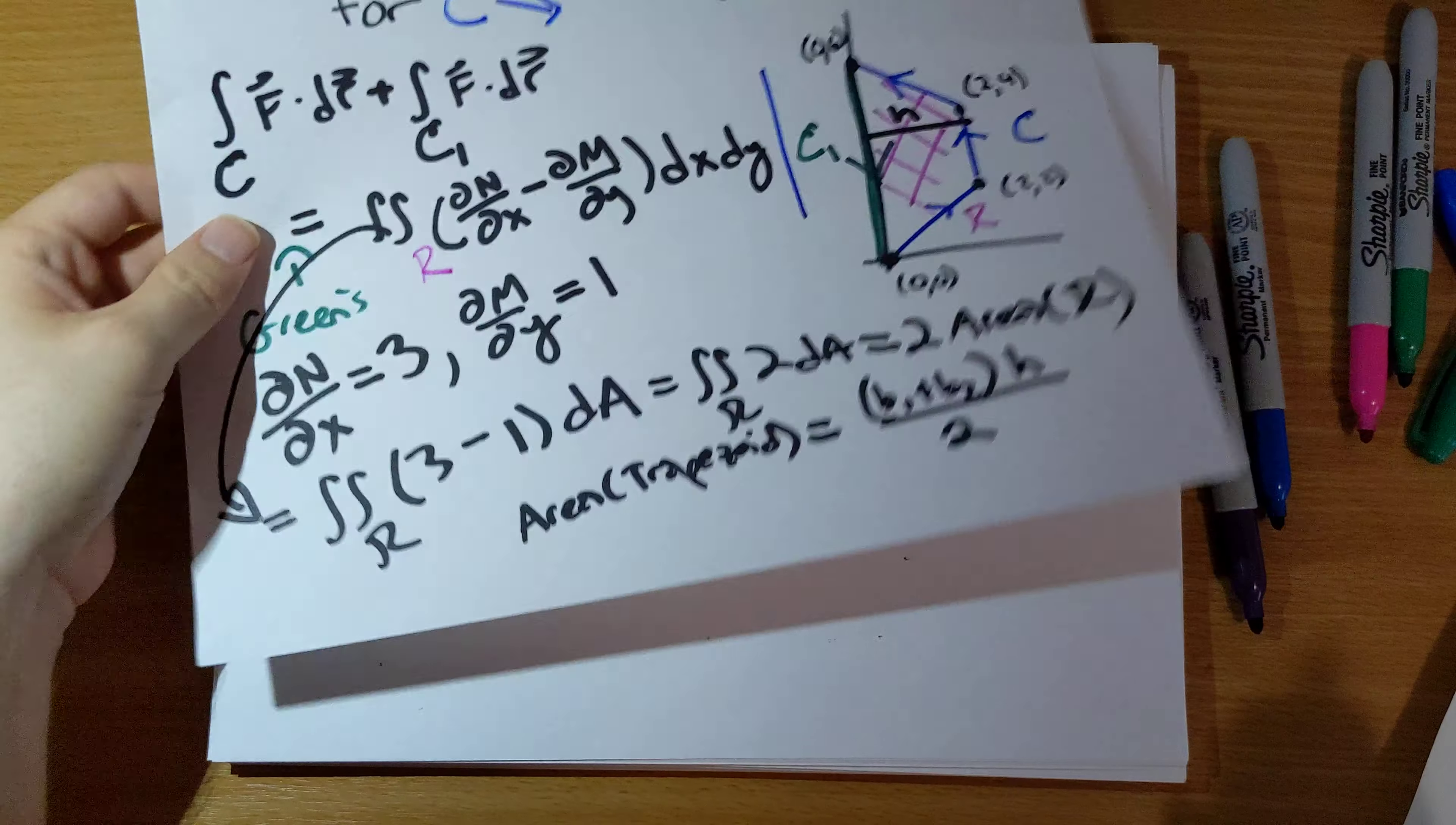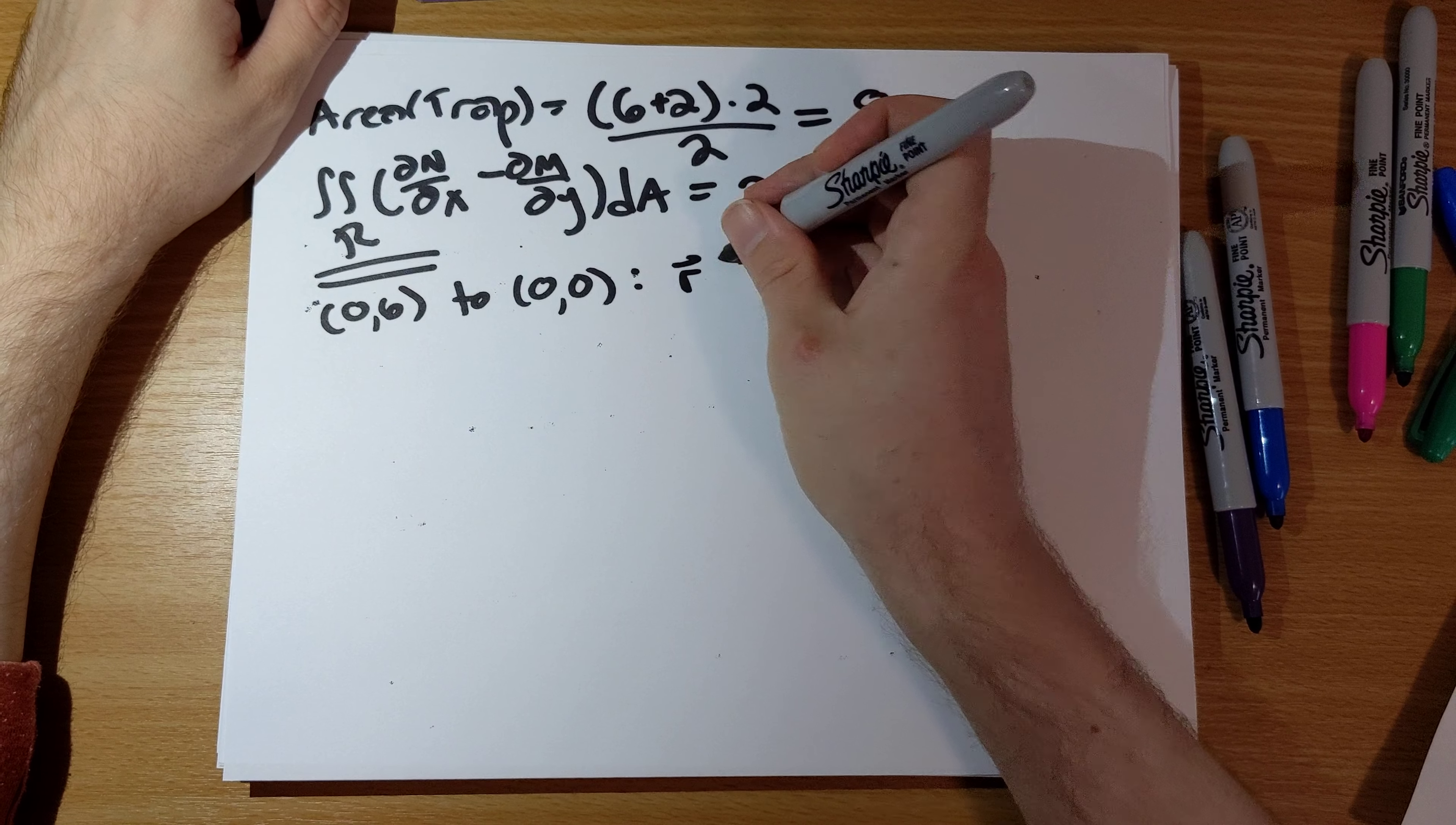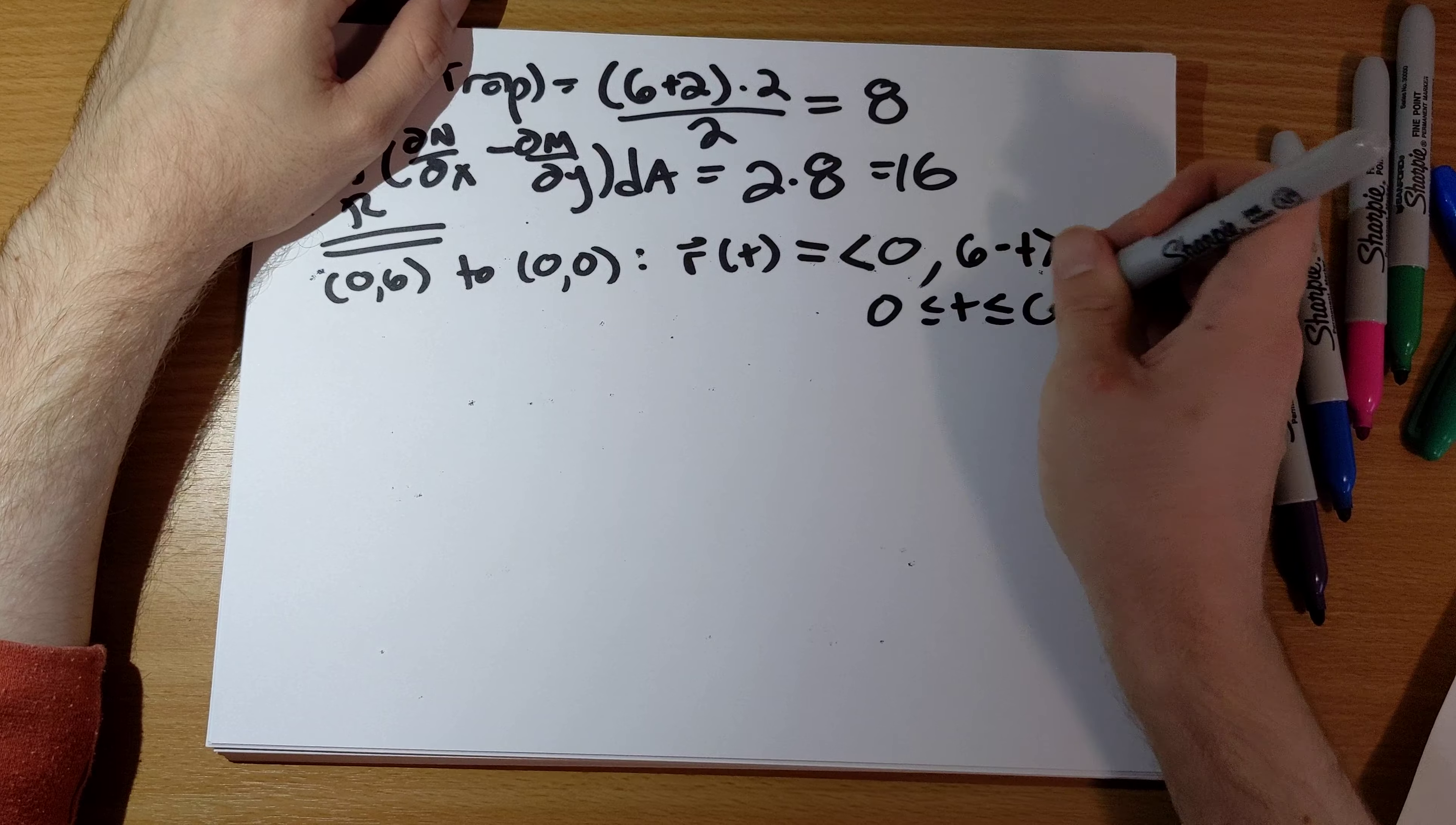One integral computed, one left to do. We need to parametrize the line segment from (0,6) to (0,0). The x coordinate is always 0, and the y coordinate has to go from 6 to 0. I'm going to make y = 6-t and let t run from 0 to 6.